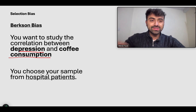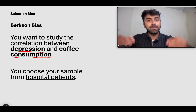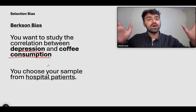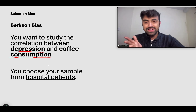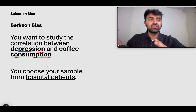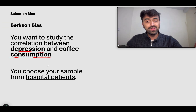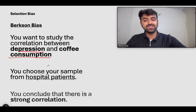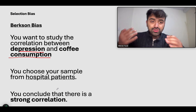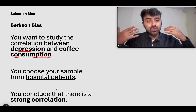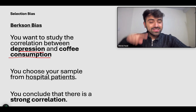You're trying to study depression in hospital patients, but a lot of hospital patients may already be depressed due to a plethora of other reasons — comorbidities, the fact that hospitals are not very happy places. Therefore you can't choose your sample from hospital patients and then erroneously conclude that there is a strong correlation. Don't choose your sample from a hospital if your hypothesis applies to the general population.